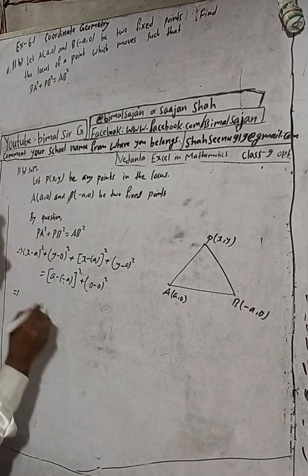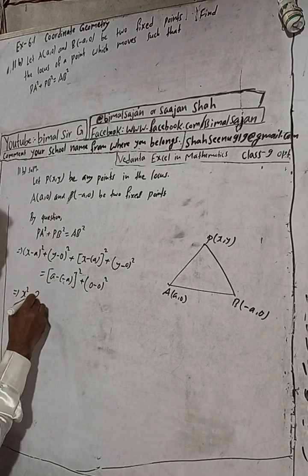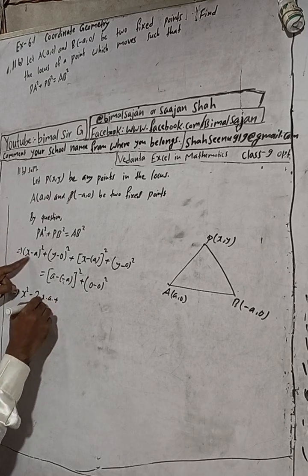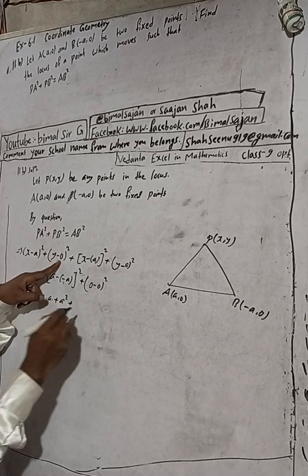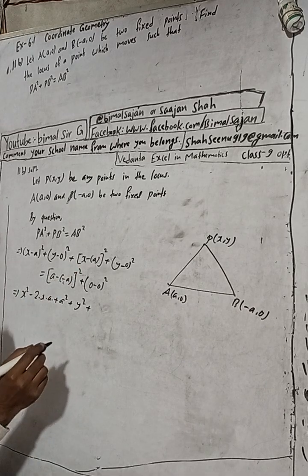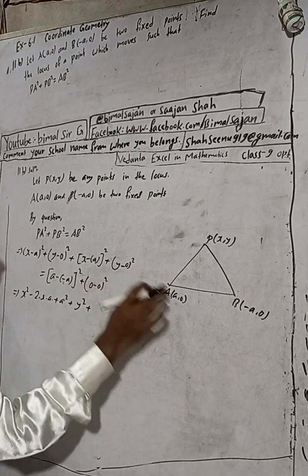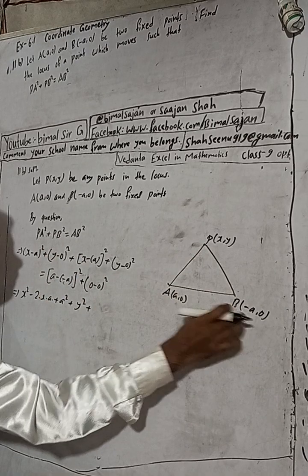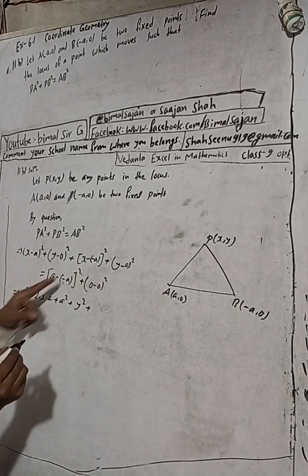Now expanding using the formula (a - b)² = a² - 2ab + b²: PA² = x² - 2ax + a² + y². For PB², since x minus (-a) is x + a, applying (a + b)² gives x² + 2ax + a² + y².